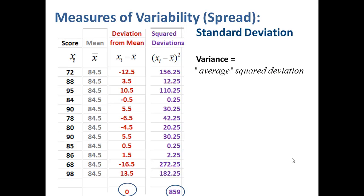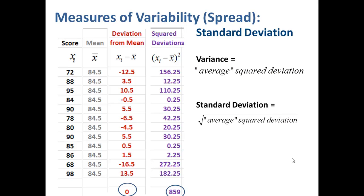The variance is the average squared deviation. The word average is in quotes because for the sample variance, we divide by one less than the number of data values — that is, n minus 1. Then the standard deviation is the square root of the variance, so that our measure of variability is in the same units as our measure of center instead of squared units.